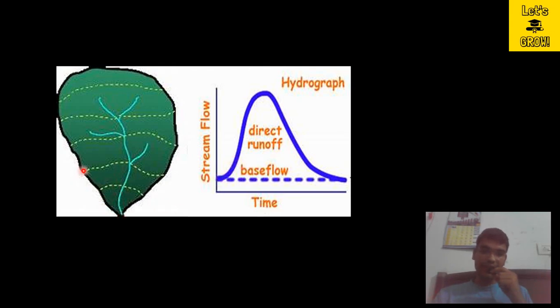After some time, this complete area which is covered by these two dotted lines is going to contribute at the outlet, so discharge will be increased. Later on, when these three dotted lines—this much area as I am covering with my red color laser—this much area is going to contribute at the outlet.